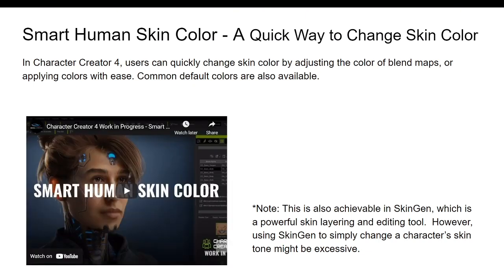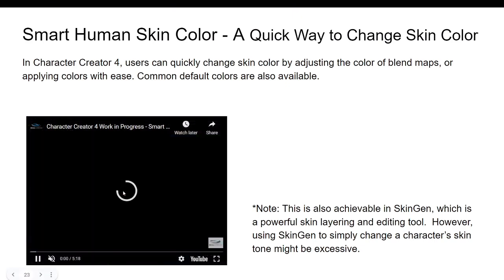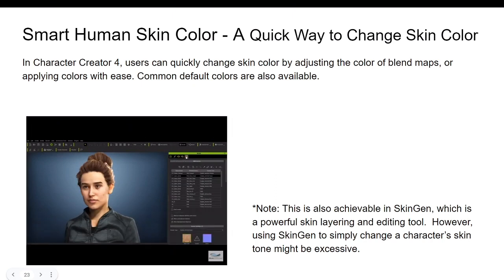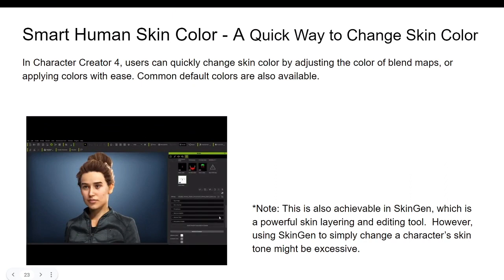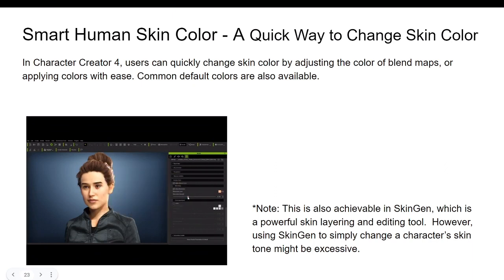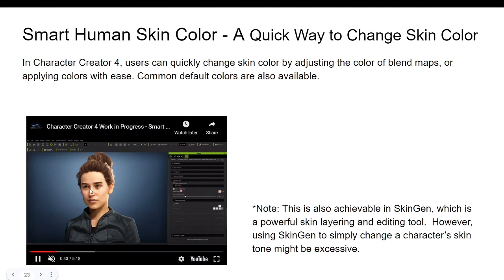Smart skin feature: a quick way to change skin color in Character Creator 4. Users can quickly change the skin color by adjusting the color of bread maps or applying color with sliders. This is done the same way as in Character Creator 3 but is now made easier and quicker. Also, this is achievable by SkinGen, which is a powerful skin layer tool — SkinGen will be updated and can be used in Character Creator 4.